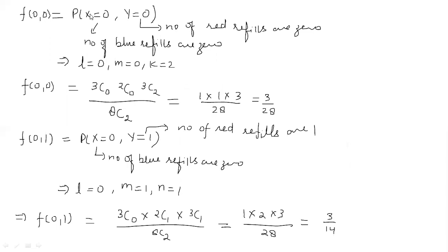f(0,0) means probability that x is equal to zero and y is equal to zero. Means number of blue refills are zero and number of red refills are also zero, means both are green refills. To hum isko logically bhi kar sakti hai. Hypergeometric distribution se nahi karna chahte hai to hum aise bhi kar sakti hai. Ki 3 mein se 0 blue balls, 3C0, 2C0 and 3C2. Kyunki two green balls hai.